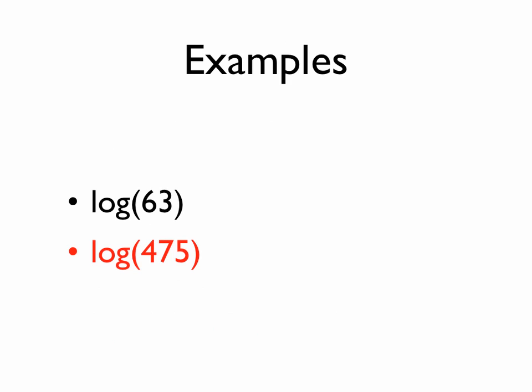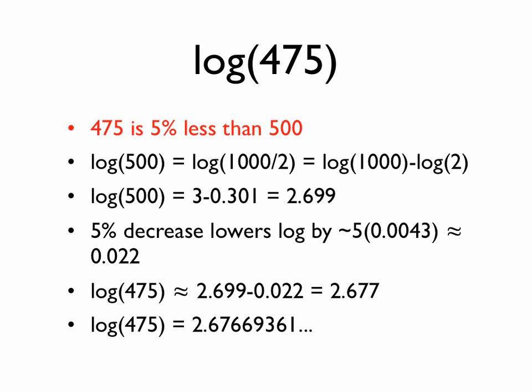The other example is log of 475. So you could probably factorize this by knowing that 475 is 5 times 95, and 95 is 5 times 19, and it gets a little messy. So with some numbers, it's more useful to do this approximation method using the estimators, the 10% and the 1%. So 475 is, well, that's 500 minus 25, so it's 5% less than 500.